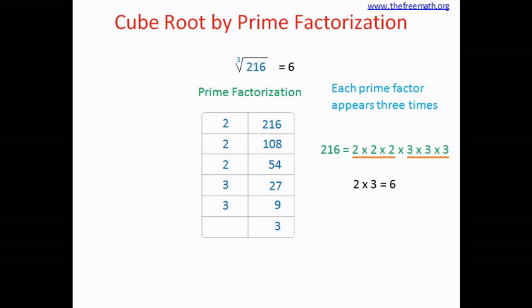When you calculate the cube of number 6, you do 6 multiplied by 6 multiplied by 6 and that's how you get 216. But 6 is essentially 2 multiplied by 3, so that means you are going to multiply 2 multiplied by 3, three times. That's why in the prime factors, 2 appears 3 times and 3 appears 3 times. So you group it in triples and take it only once and multiply to calculate the cube root.